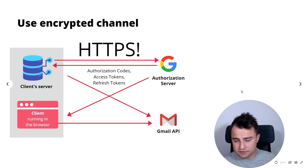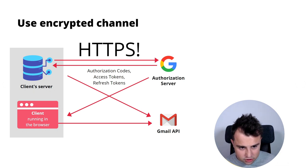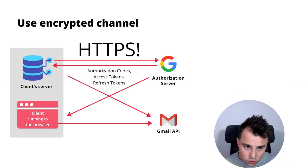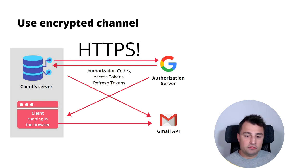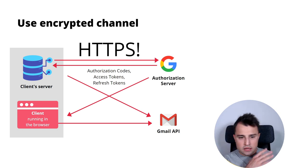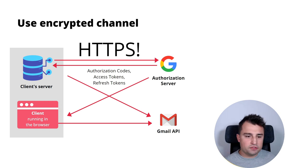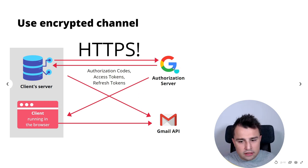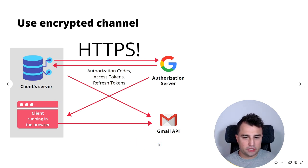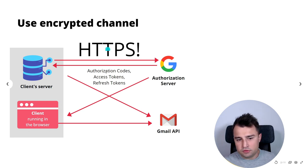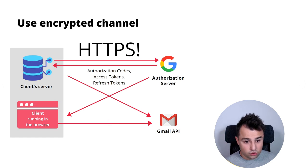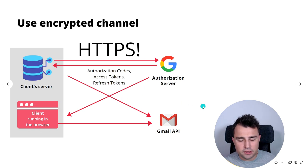First of all, I believe it's obvious but worth mentioning: you need to use an encrypted channel. Every time you pass an authorization code, access token, or refresh token between the client, authorization server, and resource server, you need to use HTTPS. If you don't, somebody may listen over the wire and get your credentials, codes, and tokens, which may be really bad.